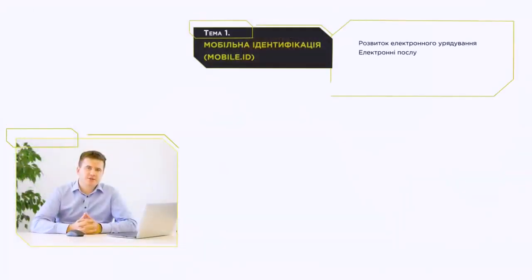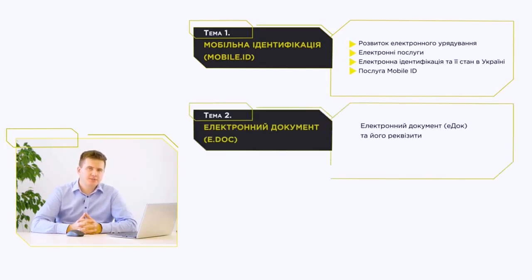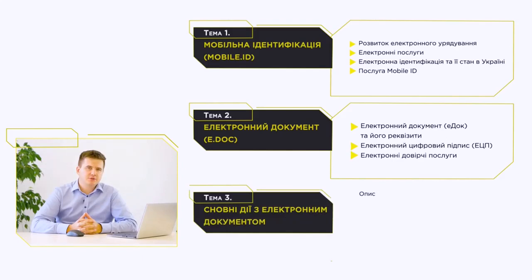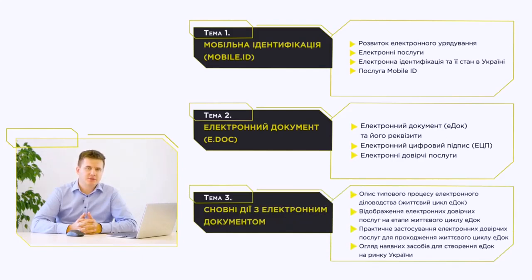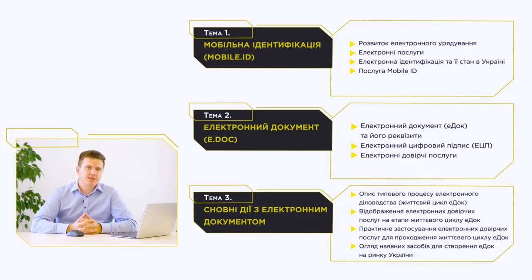The course consists of three core modules: an electronic identification module and mobile ID, an electronic document module, and an electronic trust services module. This course is made for citizens, civil servants, and small and medium-sized businesses (SME), and its purpose is to give both the skills and understanding of working with electronic documents.